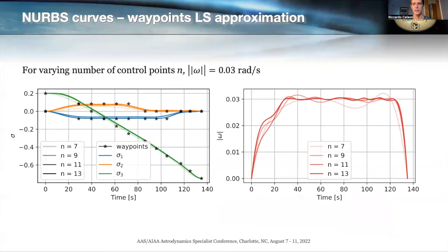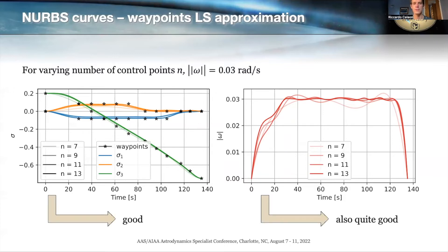This next slide shows the solution for this enhanced case, again for varying numbers of control points. For a high number of control points, the attitude fit is not as tight to the waypoints as before, because the curve is now optimizing for both attitude and angular rates. But as you can see in the plot on the right, the angular rates are much closer to the target value of a roughly constant angular rate norm of 0.03 radians per second. This formulation gives almost exactly the type of result we want, minus some small oscillations.